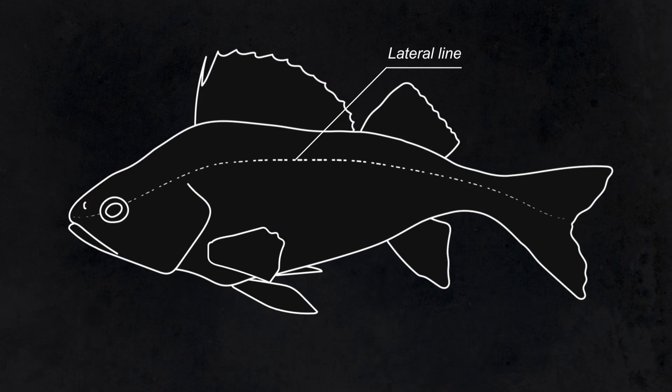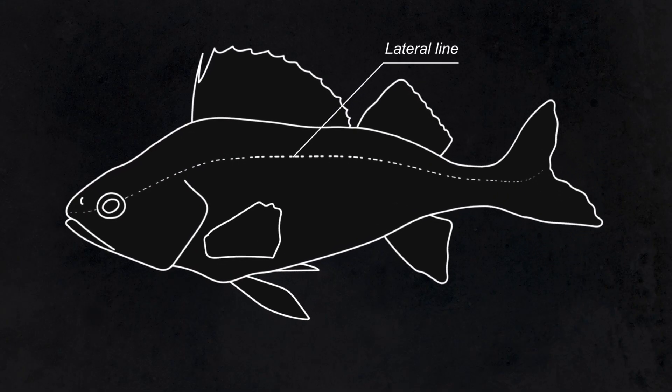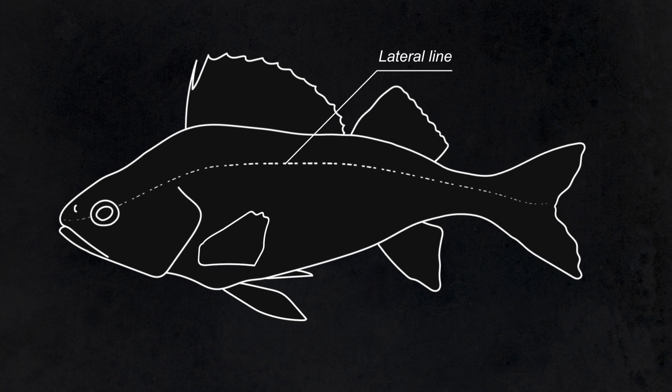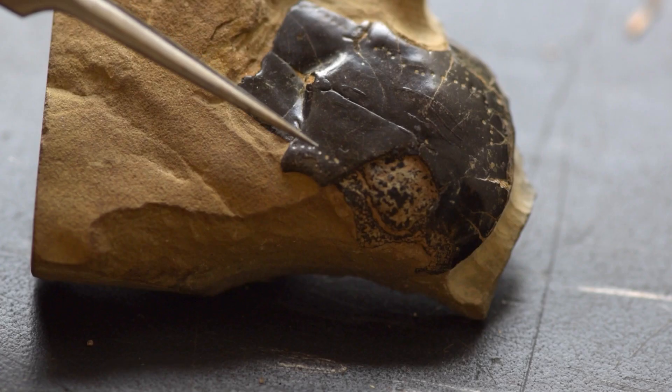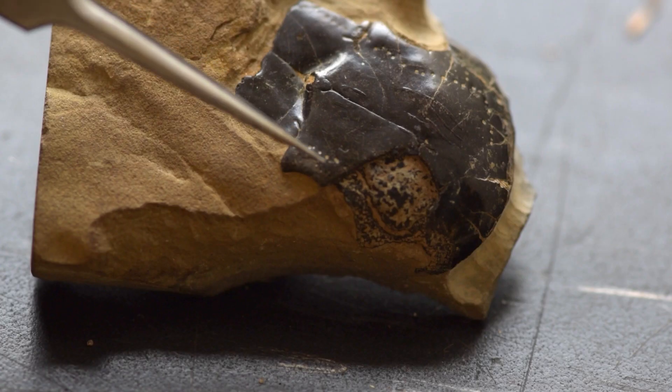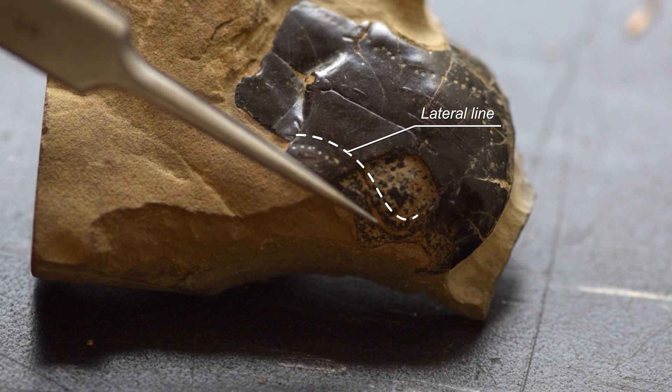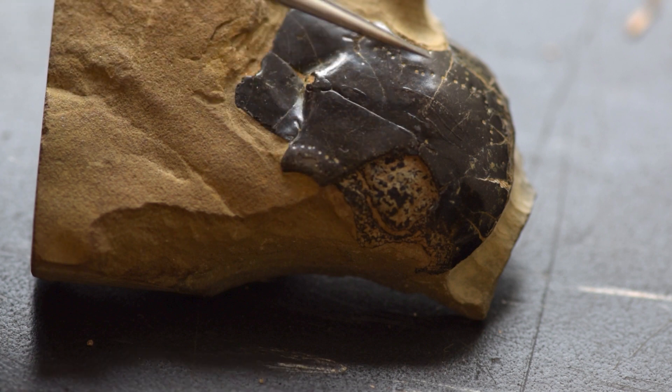The lateral line system is described as 'touch at a distance.' It is basically made up of a series of tubes and pipes down the sides of the fish, inside the skull or underneath the skin, and inside these tubes and pipes are little hair cells that move when fluid moves back and forth.